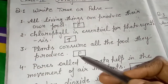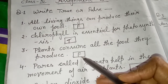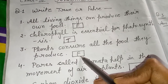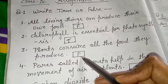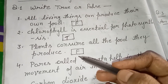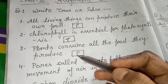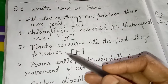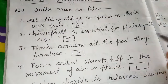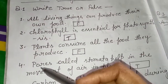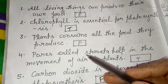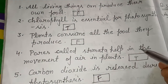Third question: plants consume all the food they produce. No, it's false. Plants do not consume all the food they produce — they save some food, like starch, for making their fruit. So this is false.